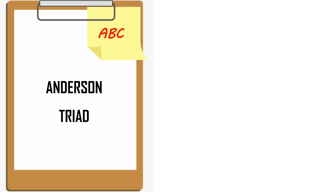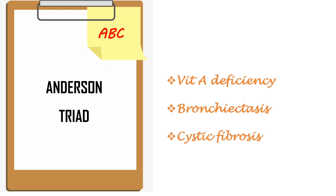Next one: Anderson triad. Anderson is our bro who teaches ABC. A is for vitamin A deficiency, B is for bronchiectasis, C is for cystic fibrosis. So vitamin A deficiency, bronchiectasis, and cystic fibrosis — Anderson bro teaches us ABC.